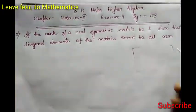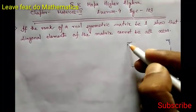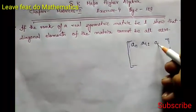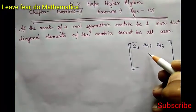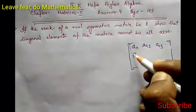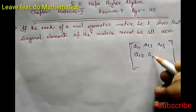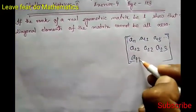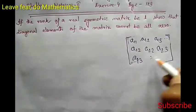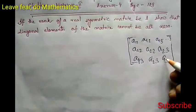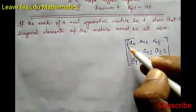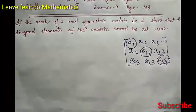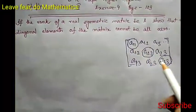So how does a symmetric matrix look? Suppose this is our matrix. Since it is symmetric, the a11 entry, a12, a13 — the a12 entry will equal a21, then we have a22 and a23. This element a13 will be the same as a31, and a23 will be the same as a32, and this will be a33. The diagonal elements can be anything — they don't have any restrictions. Since this is real mathematics, the diagonal entries can be any real numbers.